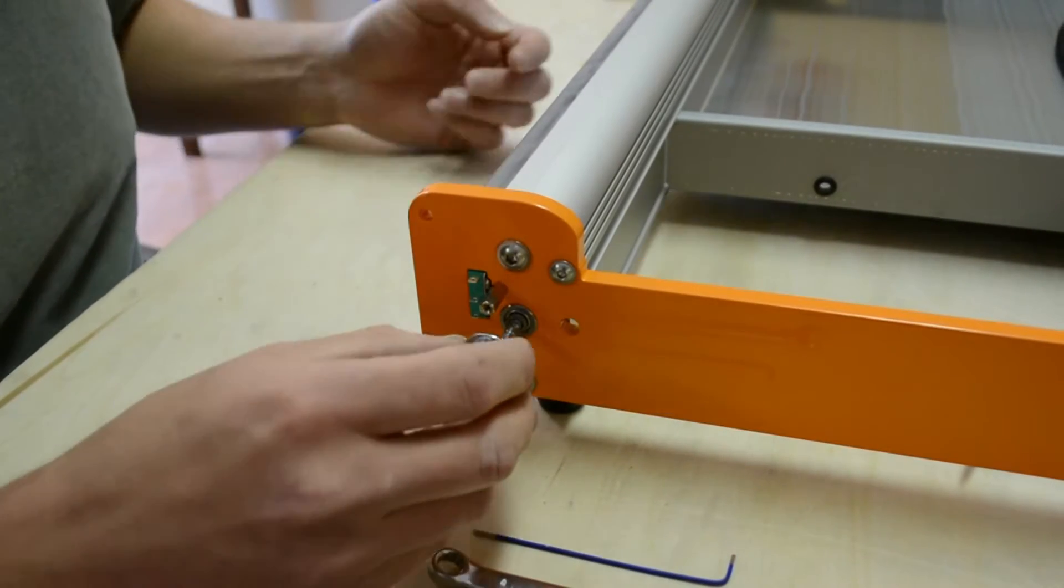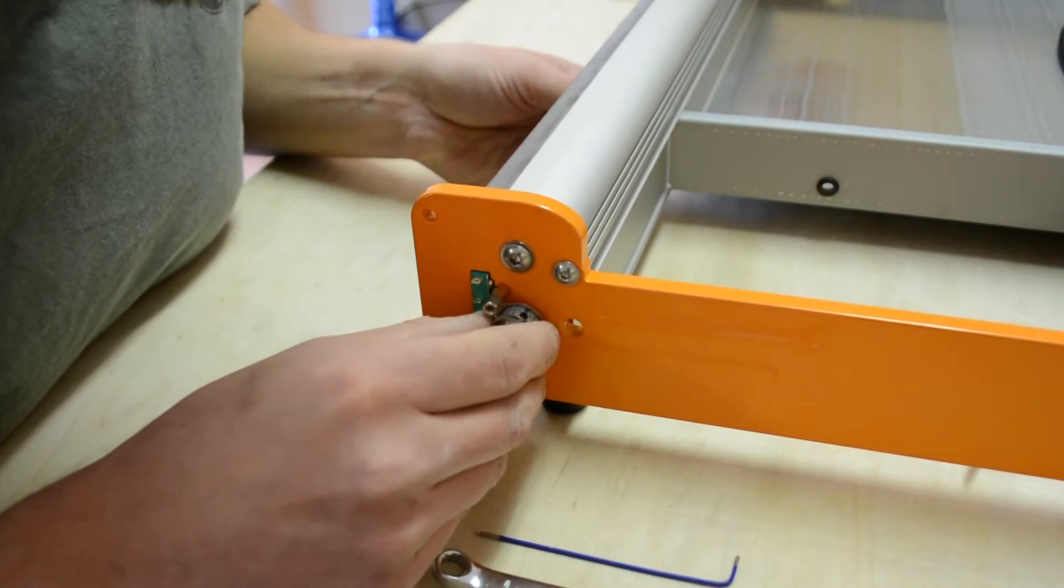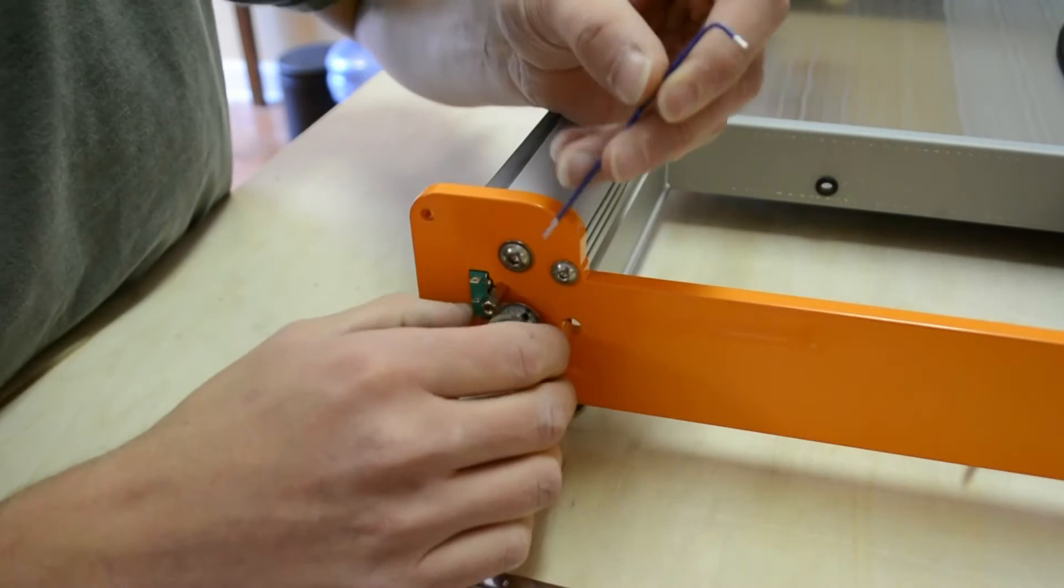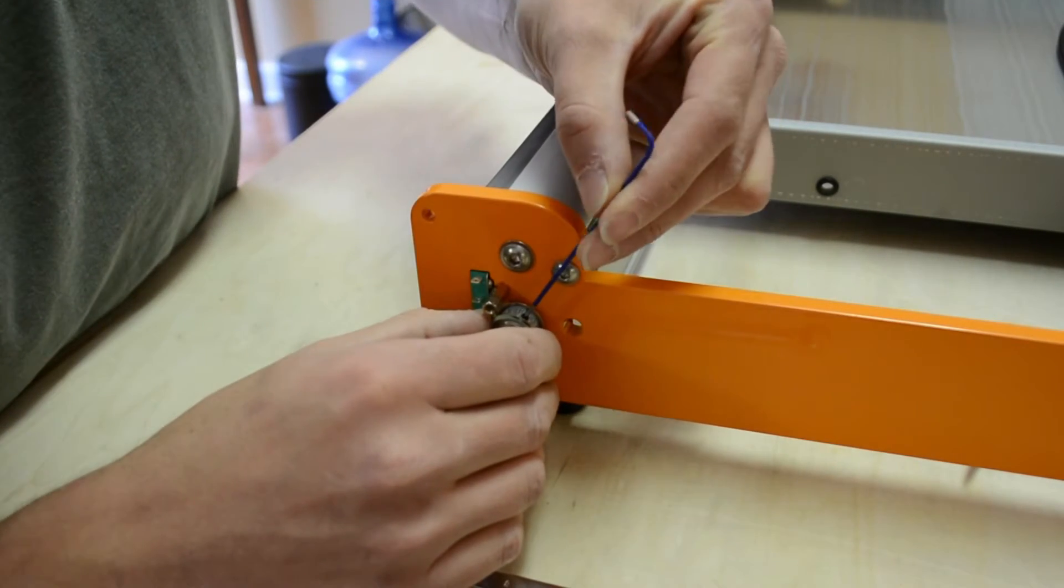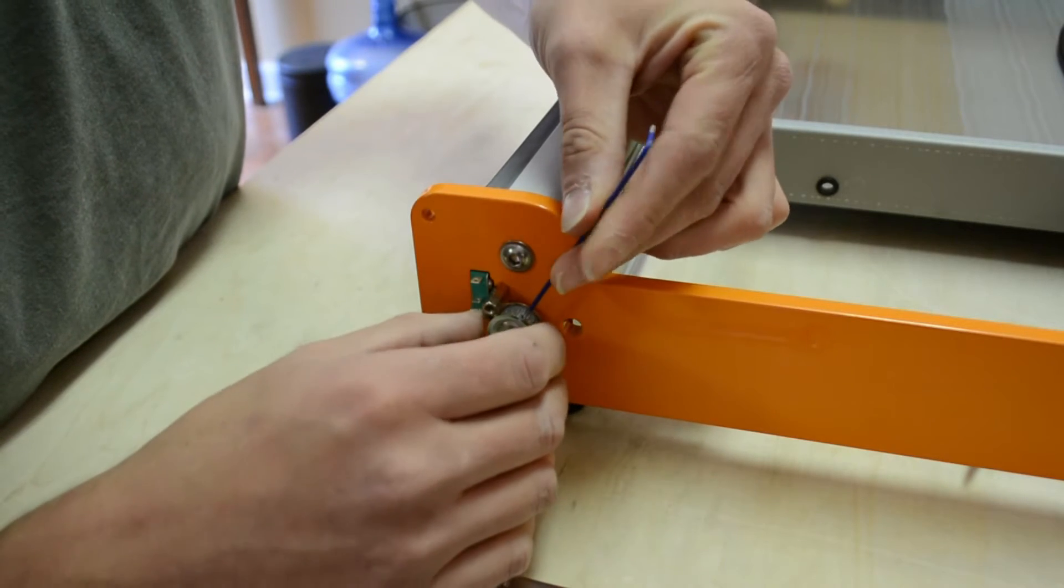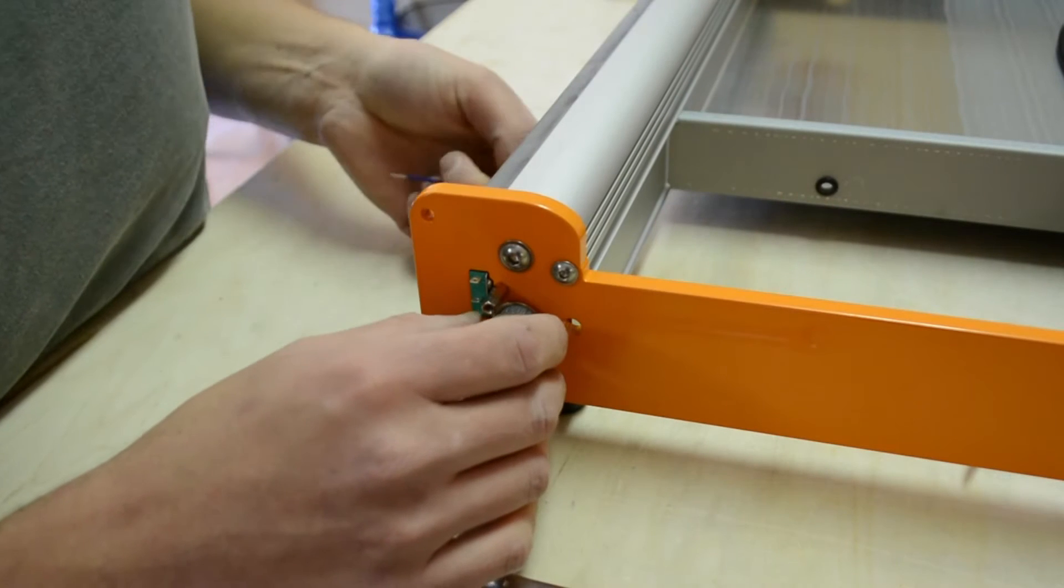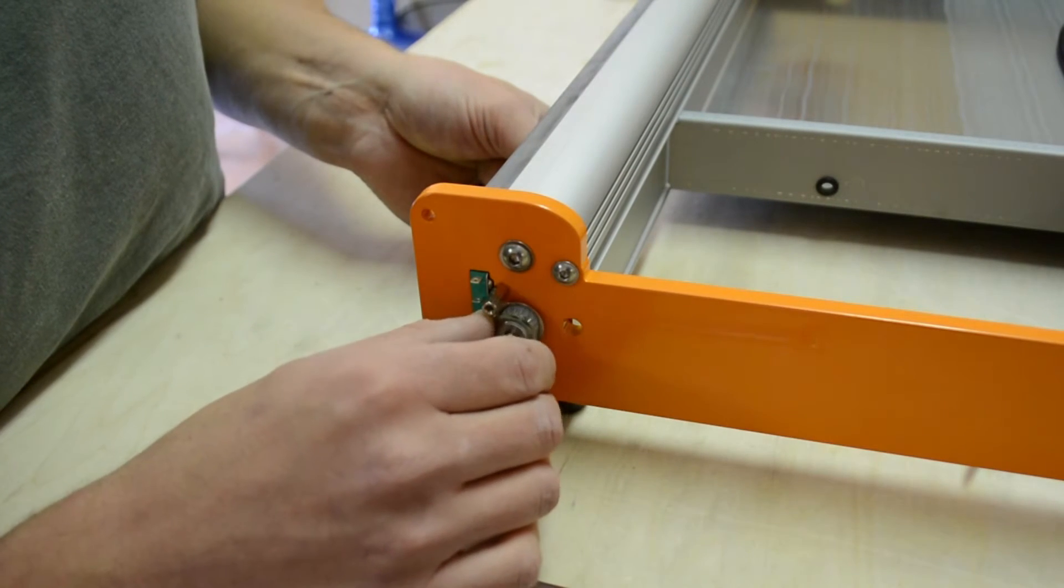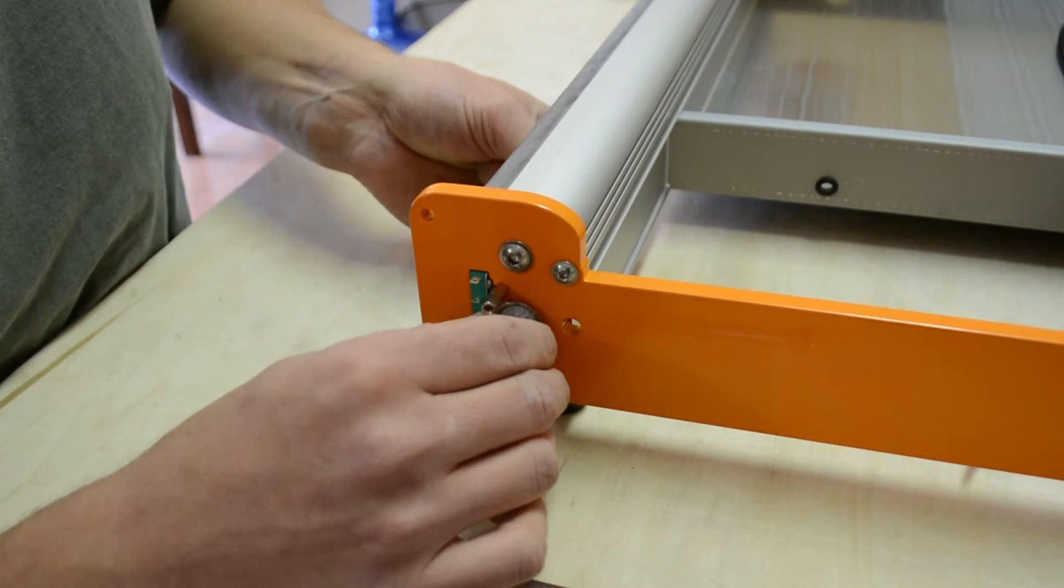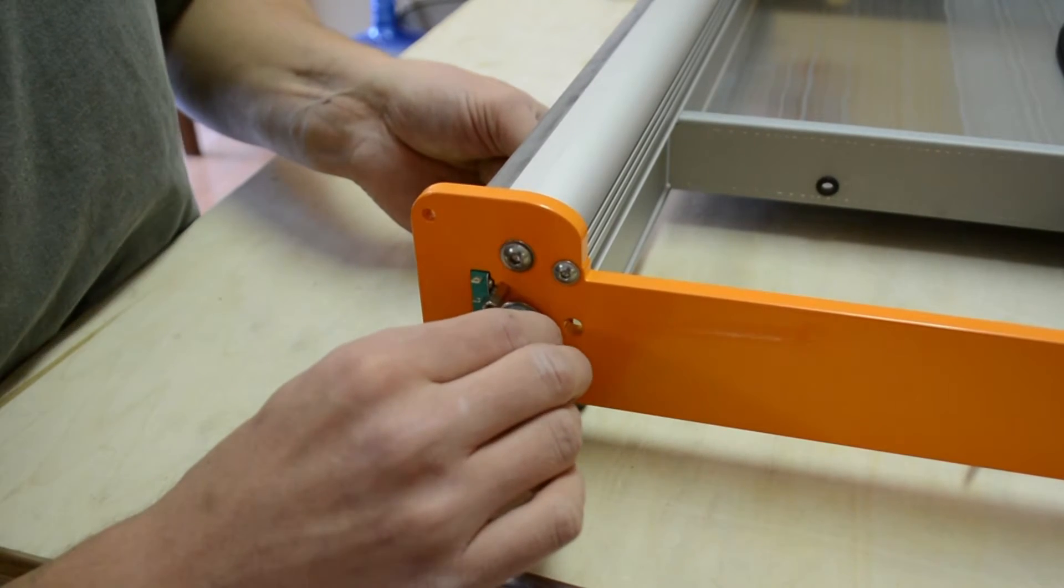Now I'm going to install the pulley onto it. Make sure it's seated nicely against that washer. I'm going to tighten it down but I still want the pulley to be able to turn. It's turning in that little flat spot on the lead screw right now.